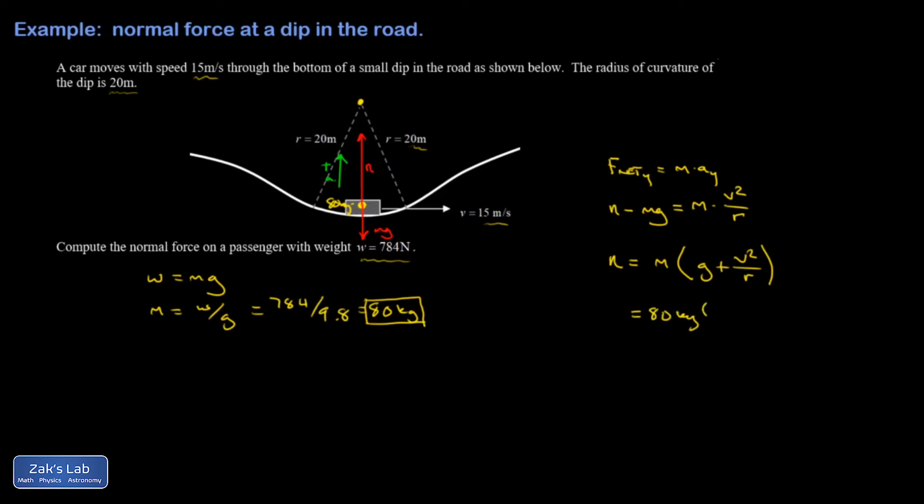So I have 80 kilograms, 9.8 meters per second squared. V squared is 15 meters per second quantity squared, over r, 20 meters.